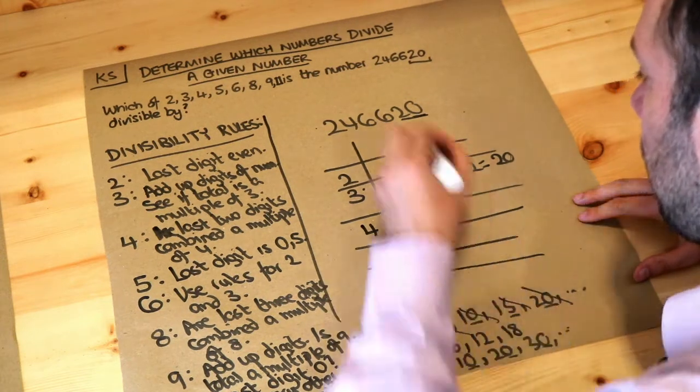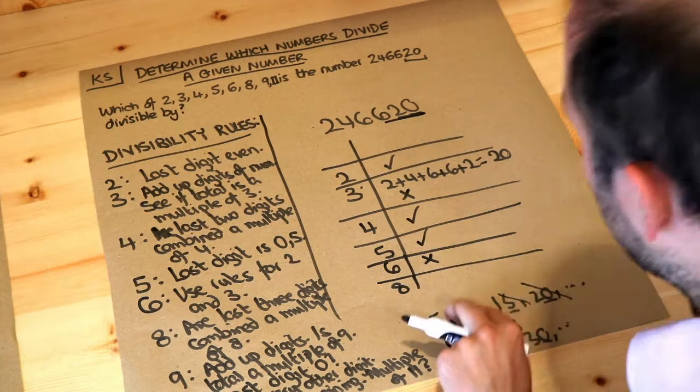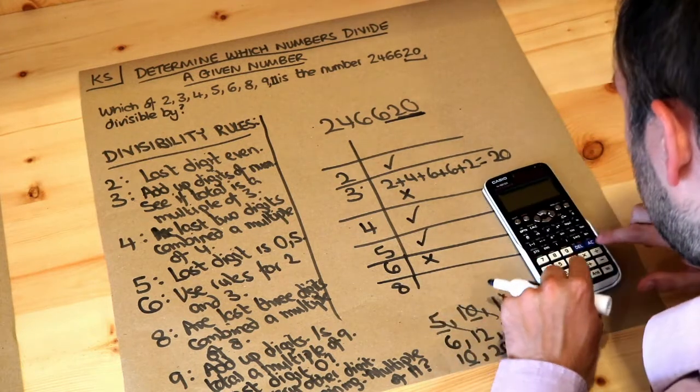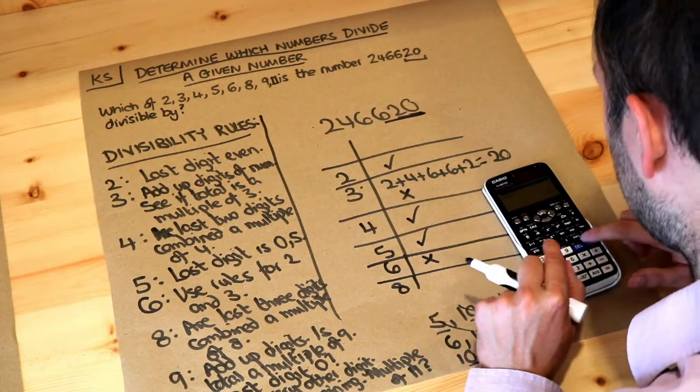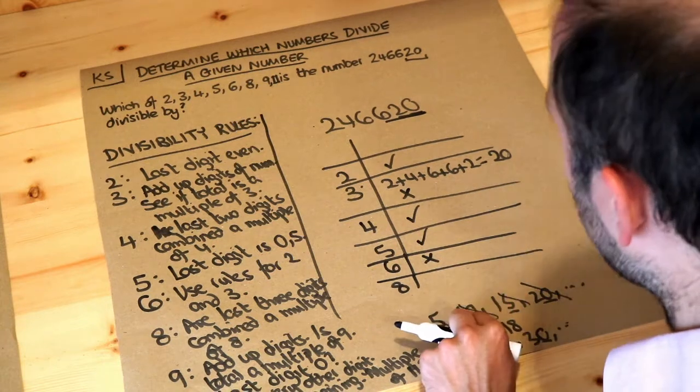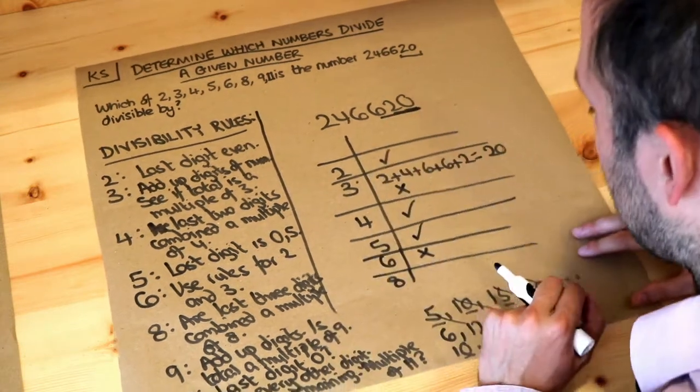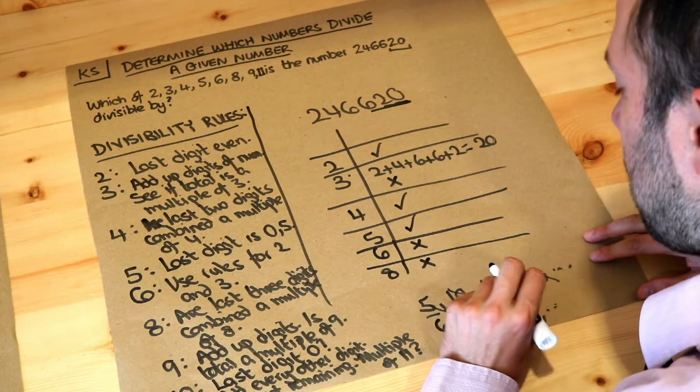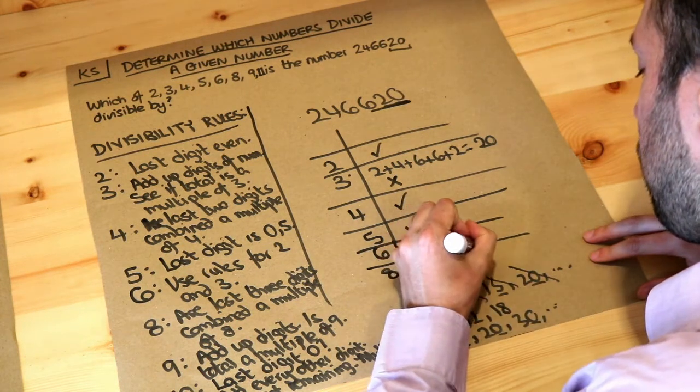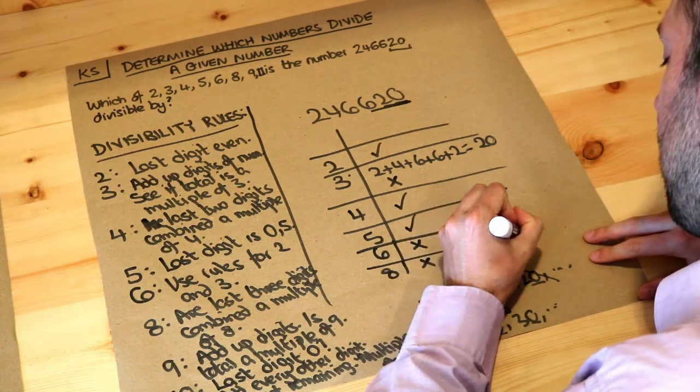8. We look at the last three digits. So 620. Now I'm going to be lazy and just do 620 divided by 8 on my calculator. Now it's not a whole number. So 620 is not in the 8 times table. So it's therefore not divisible by 8. So 620 not in 8 times table.